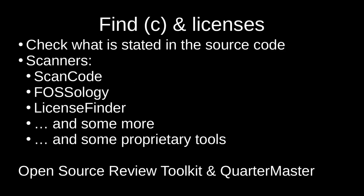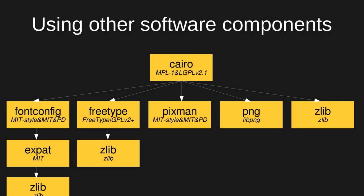To find the copyright holders, authors, and licenses, there are a couple of tools. We can check what is stated in source code — a project may say it's licensed under GPL v3, but there may be some files that are not. So usually what you do is scan every source code file, using tools like scan-code or License Finder. There are more tools, even some proprietary ones, and wrappers like ORT and Quartermaster that help with this. You basically need to look at source code to find the copyright holders and licenses. For Cairo, for example, Cairo itself is licensed under MPL 1 and LGPL version 2.1.